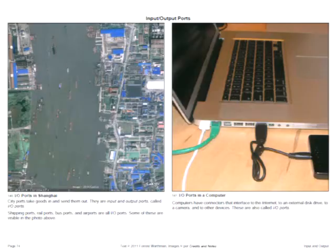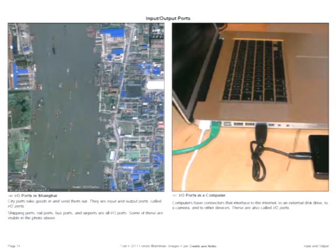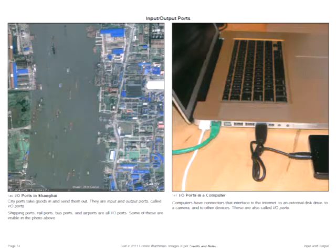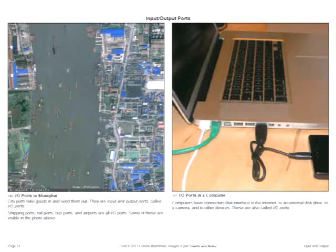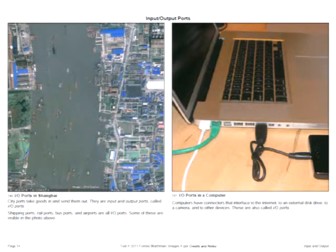This is Hong Kong Harbor, and on the left is an image of a river in Shanghai. You can see freight boats moving, the ports where they dock and unload their goods, and other vehicles — trains or trucks — come on land to redistribute the goods. On the right is a computer with input-output ports: connectors that connect to external disk drives, an Ethernet cable hooked to a router, a camera, or other devices.